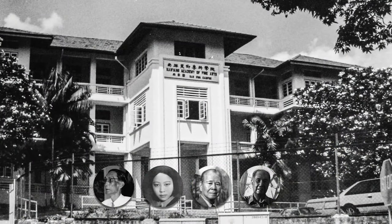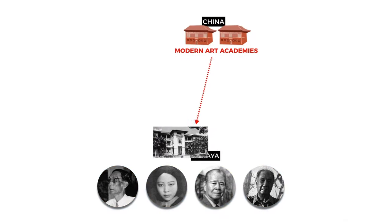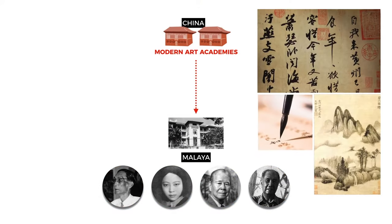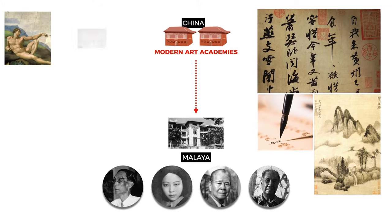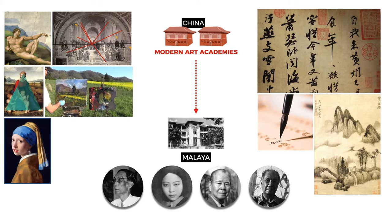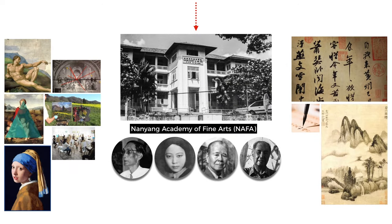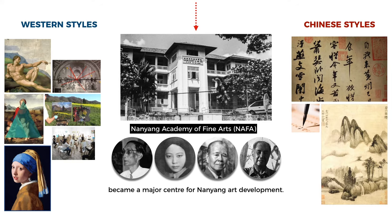These artists were trained in modern art academies in China, where they learned the skills of both Chinese classical calligraphy and ink painting, and Western oil realist techniques — classical perspective, positional techniques, plein air painting, portraiture, and live drawing. NAFA was modeled after one of these modern art academies in China, which taught both Chinese and Western art styles, and became a major center for Nanyang art development.